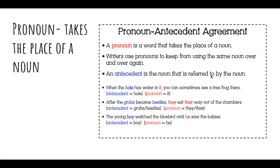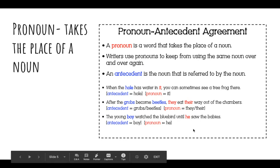An antecedent is the noun that is referred to by the pronoun. So 'when the hole has water in it, you can sometimes see a tree frog there' — the antecedent is 'the hole,' the pronoun would be 'it.' You always want to make sure those agree. You wouldn't say 'when the hole has water in her' — that wouldn't make sense because a hole is a thing, it's an 'it,' not a person. 'After the grubs become beetles, they eat their way out of the chambers' — the antecedents are grubs and beetles, the pronouns are 'they' and 'their.' 'The young boy watched the bluebird until he saw the babies' — a boy is a 'he,' so you want to make sure those agree.